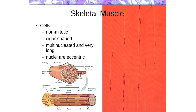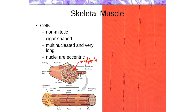Skeletal muscle cells are non-mitotic, partially because they are multinucleated — mitosis is simply not possible for multinucleated cells. They are also completely filled with protein, which is why you see a lot of eosinophilic staining. These structures — myofibrils — are composed of many myofilaments, and the cells are just completely filled with this protein material. There's barely any space for other organelles, which is why the nuclei are eccentric, pushed off to the sides.